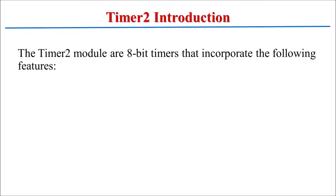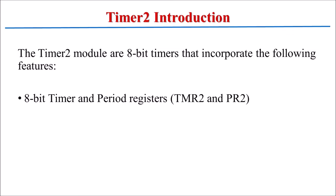Timer 2 is an 8-bit timer with specific features. It has two associated registers: TMR2 and PR2. The user loads a count value into the PR2 register, and the TMR2 register is incremented after each clock cycle. The microcontroller then compares the counts of these two registers.